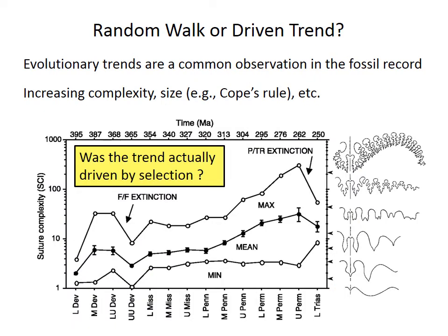Returning to our ammonoid example: was this a driven trend or could it have been a random walk? Well, there's certainly a bound — suture complexity, by its definition, can never go below 1, which is the value of a straight line. So we need to test this more rigorously.